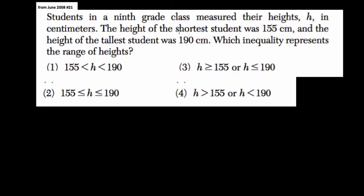As we read this, keep that in mind. The problem says students in a ninth grade class measured their heights, h, in centimeters. The height of the shortest student was 155, so our shortest value is 155 and everything else must be greater than the shortest. The tallest is 190.